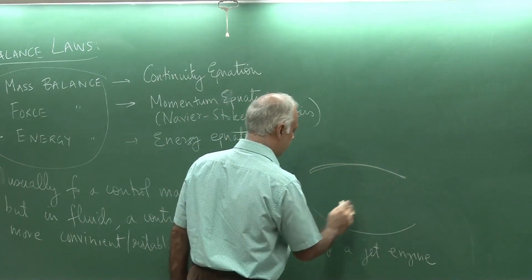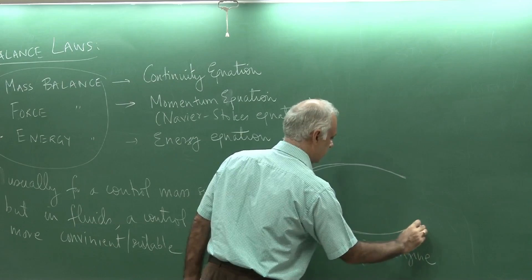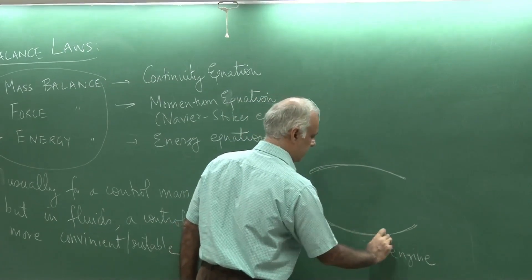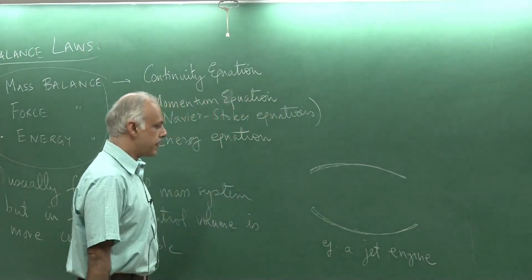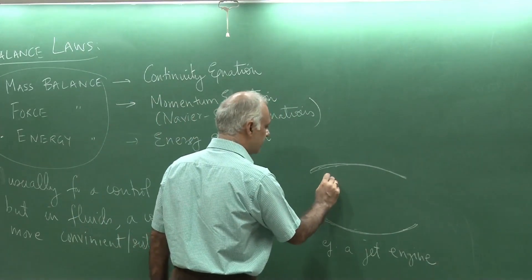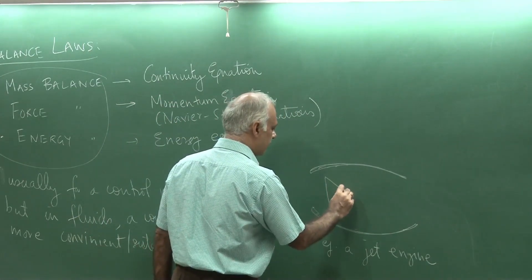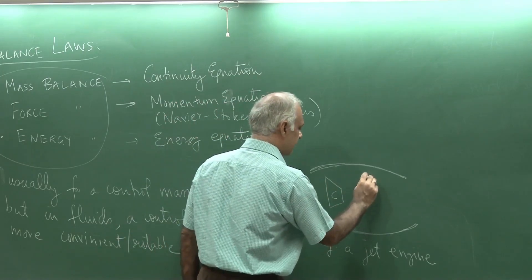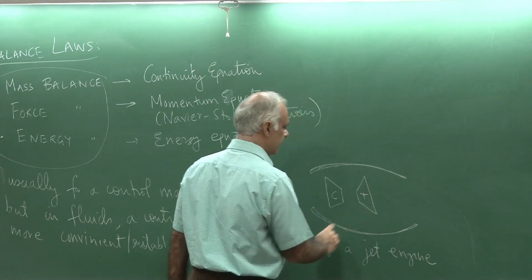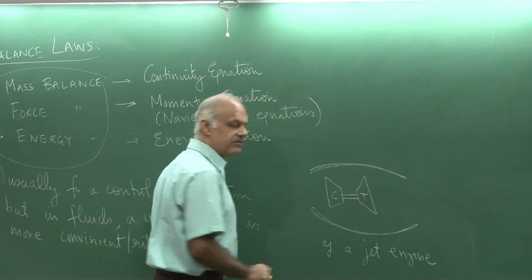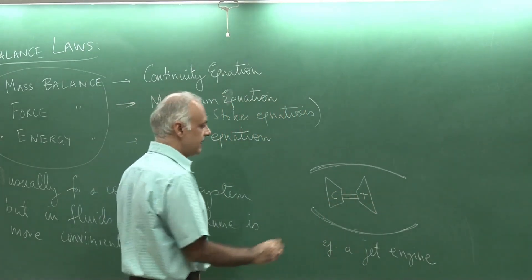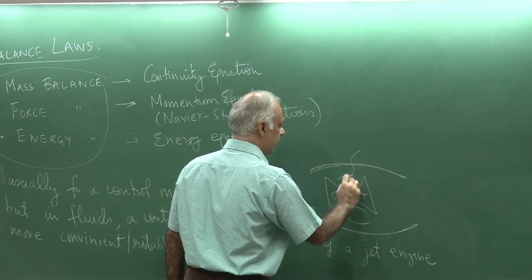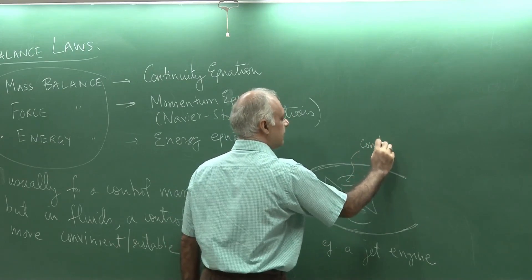And you could have some components inside, for example, you could have may be a compressor here which is driving a turbine and they are connected by a shaft, so they spin together. You could have a combustion chamber, this is where the combustion takes place.